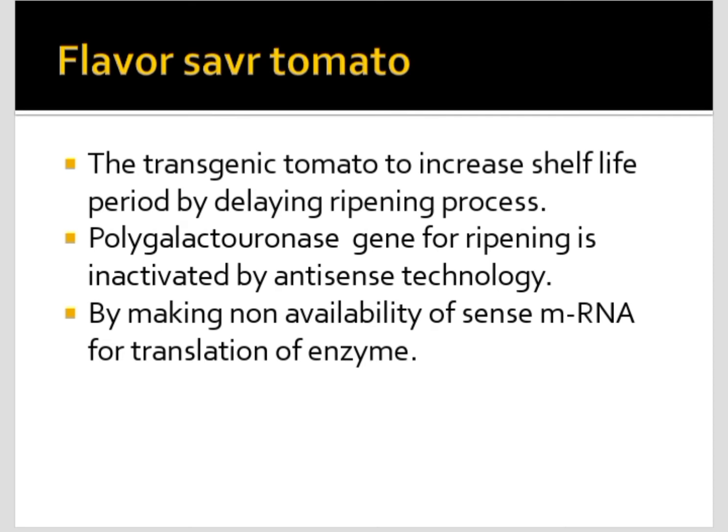When an insect infects the plant, the Bt proteins bind to the gut of the insect where alkaline pH is present, get activated, and make pores on the gut, killing the insect. These cry proteins — crystalline proteins — are inactive in the host and bacteria, and are activated only in the insect. This makes the plant insect-resistant. This method is used not only in cotton but also in brinjal and tomato.